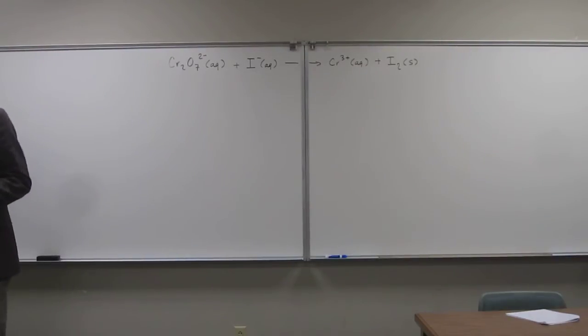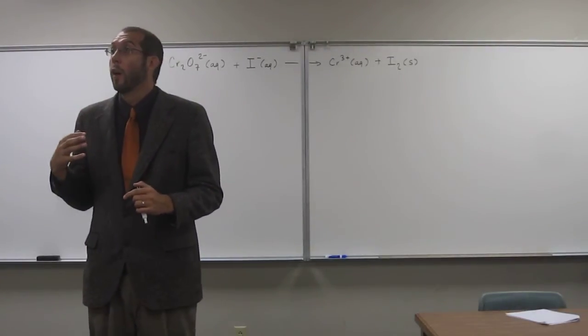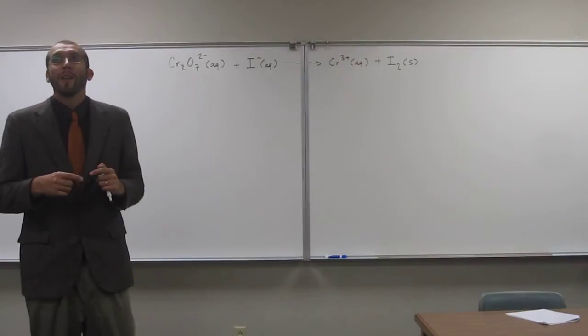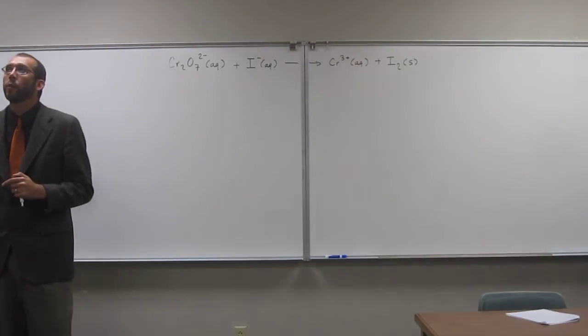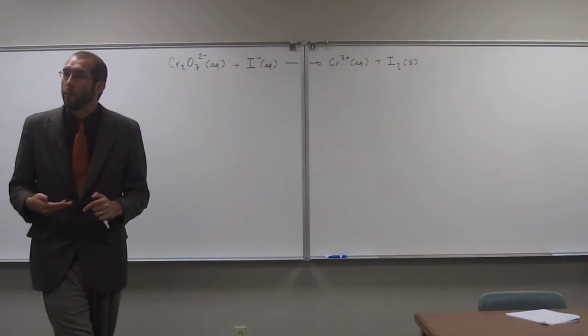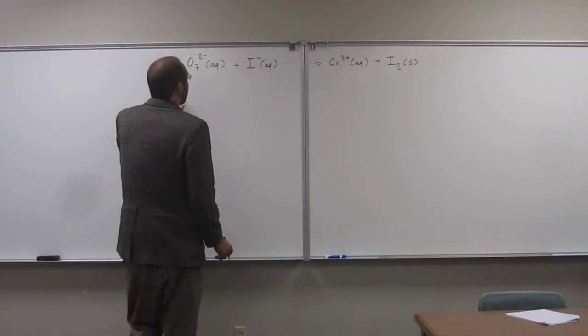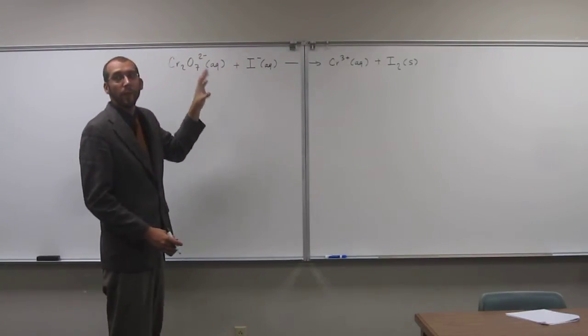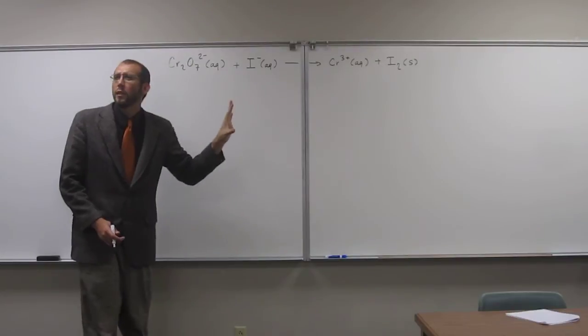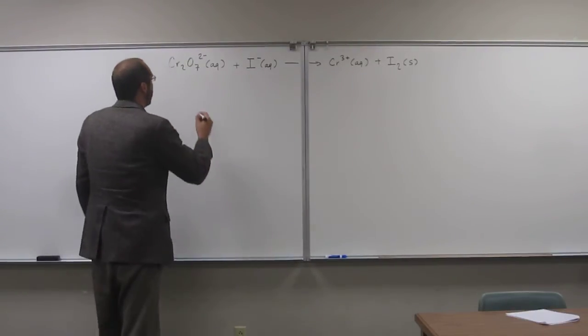So remember, oxidation, one of the definitions that we talked about was to get more oxygen on you. So you could remember that and say, well, then that means if I'm getting reduced that I'm getting less oxygens on me. So just think about that. If I look at the two half reactions here, let's split them up. This should be kind of obvious for you by now. There's the chromium one and the iodine one.